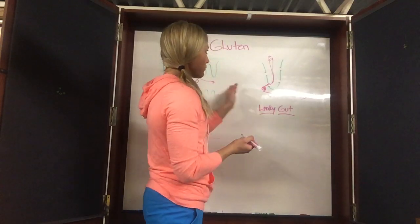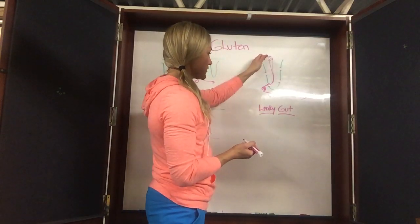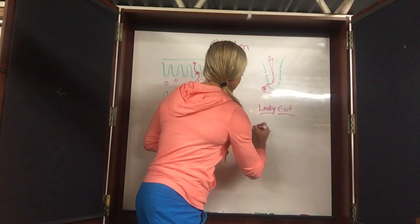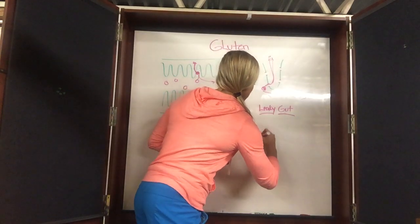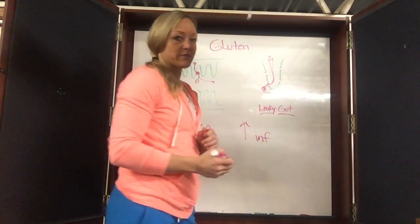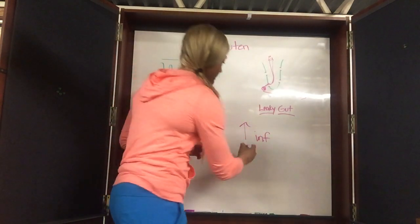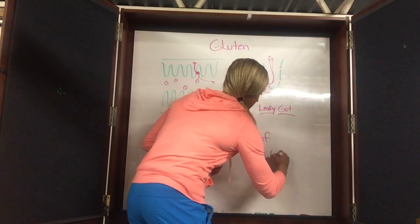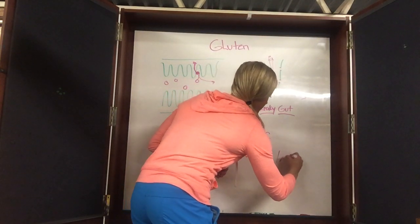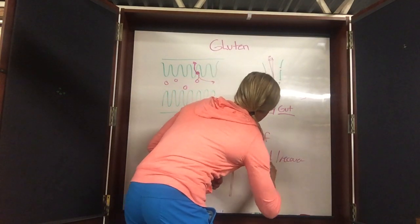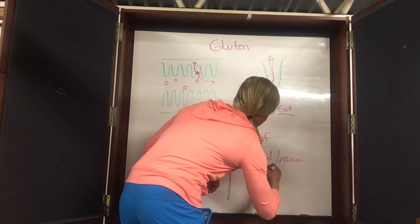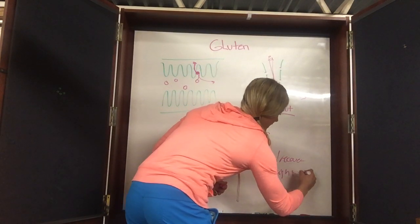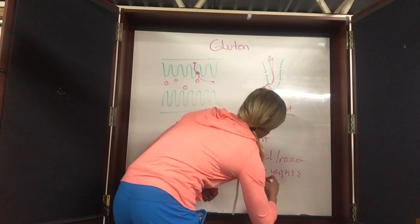When we get gluten going into the bloodstream, we increase inflammation. When we increase inflammation, we decrease our body's ability to heal, recover, lose weight, and regulate hormones.